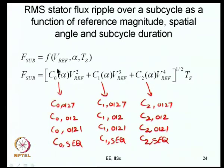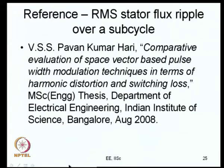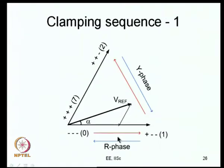The complementary double switching clamping sequence uses the other zero state: sequence 7212 applies state 7 for T_z, vector 2 for T2/2, vector 1 for T1, then vector 2 again for T2/2. The reverse is 2→1→2→7. There are also switching sequences 1012 and 2721 which are not discussed here but have been covered previously.